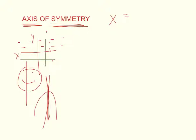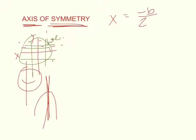It can be anywhere on the coordinate plane. So, what is our axis of symmetry? What is the equation? Well, it's x equals negative b over 2a.